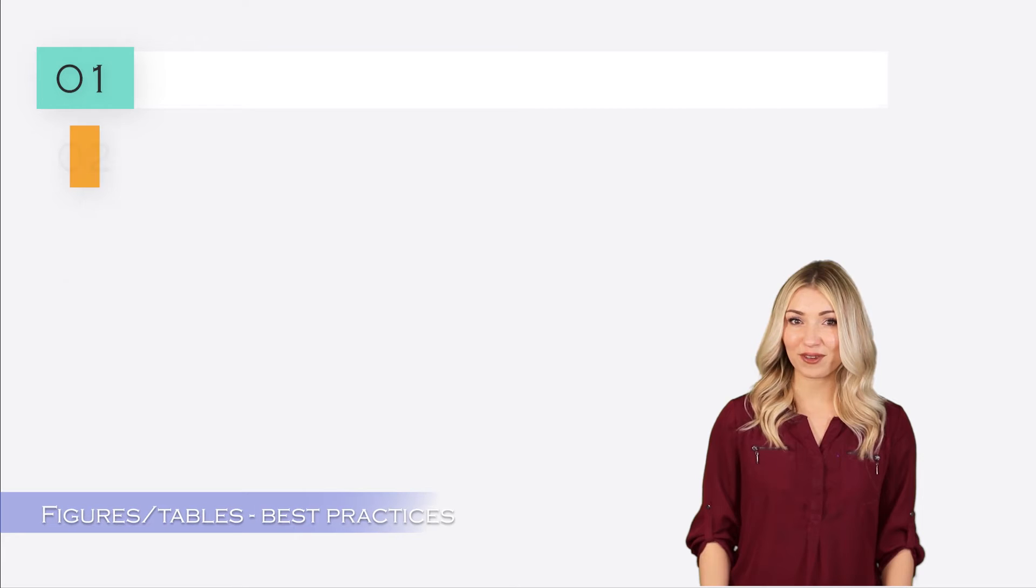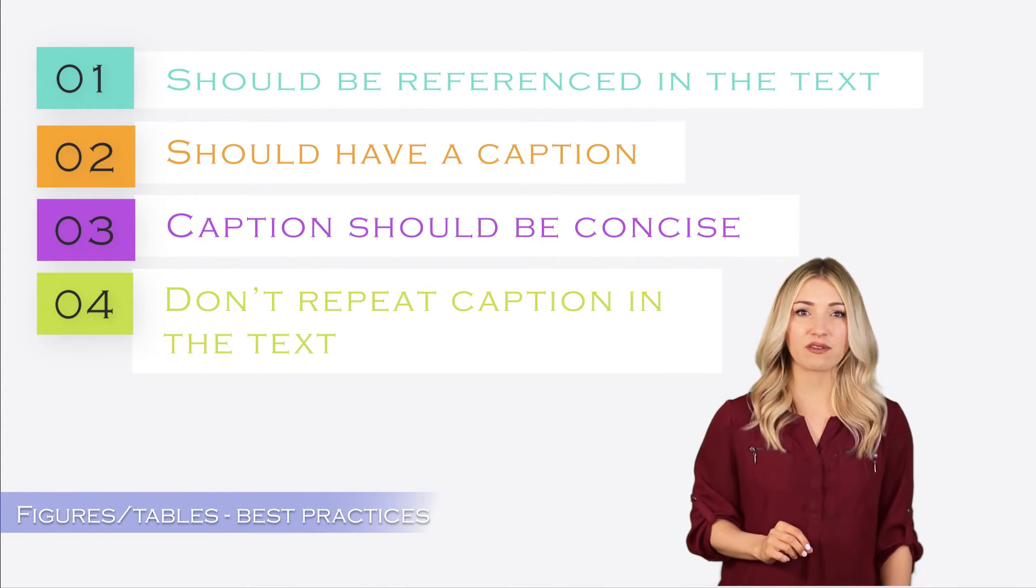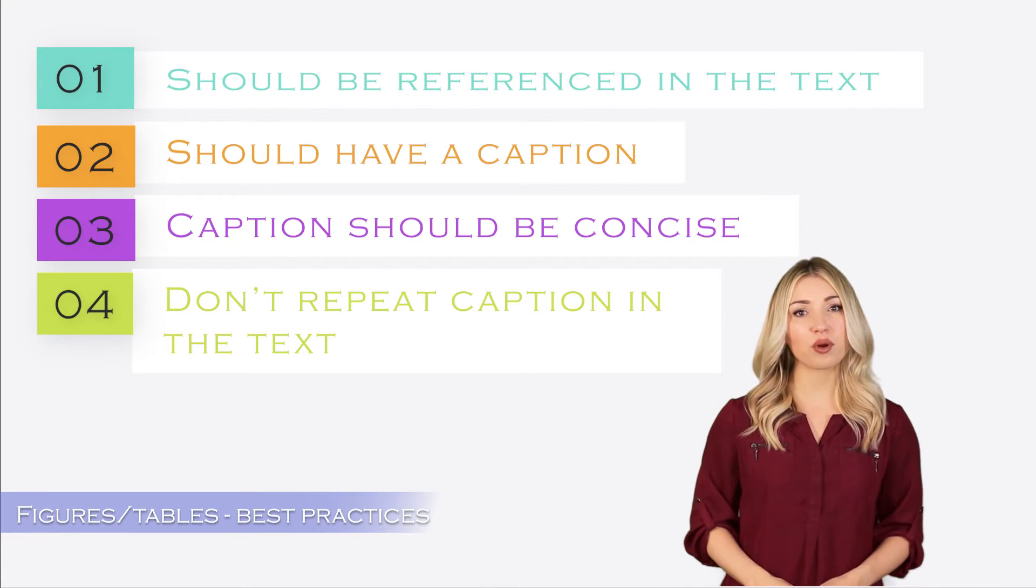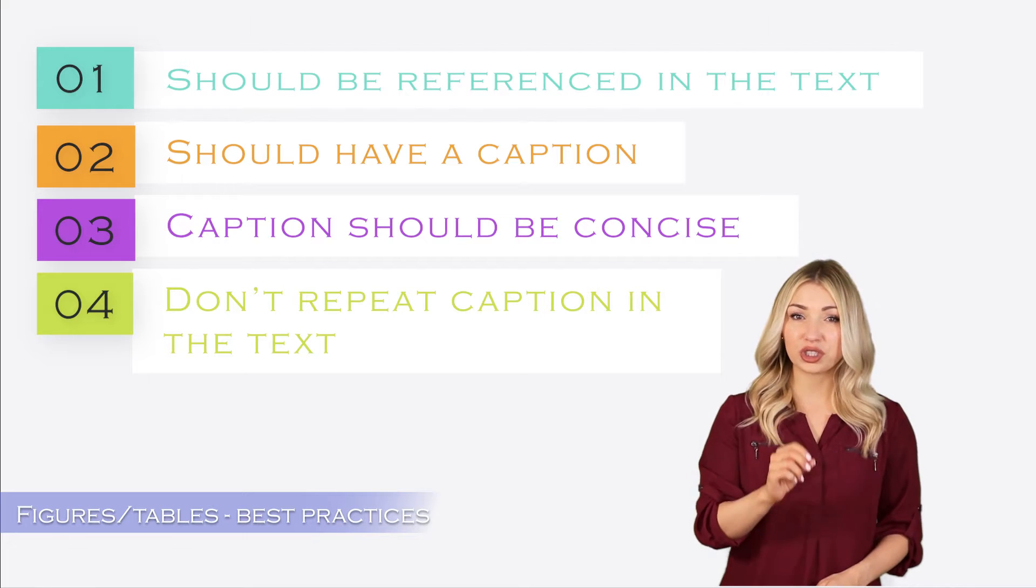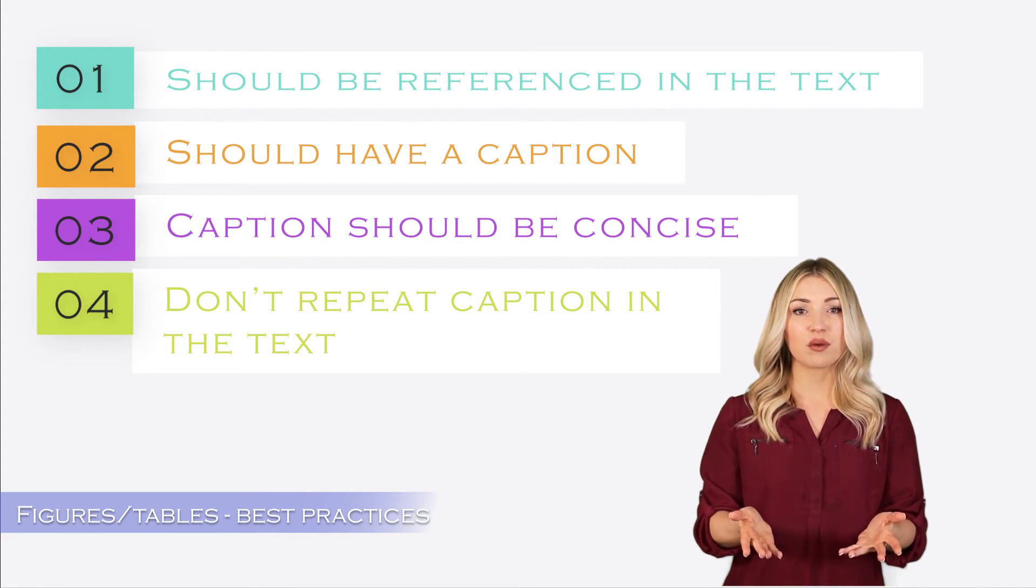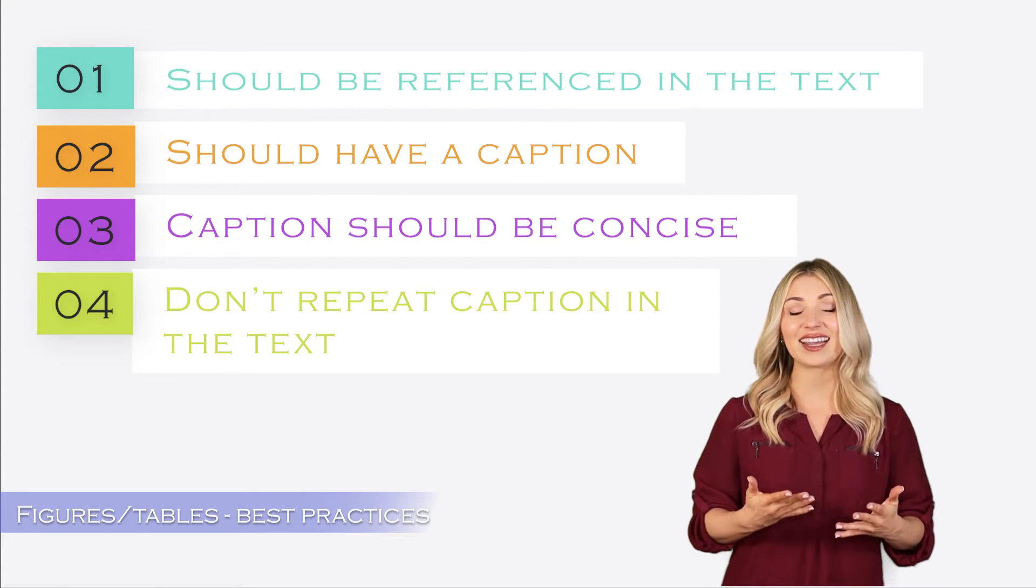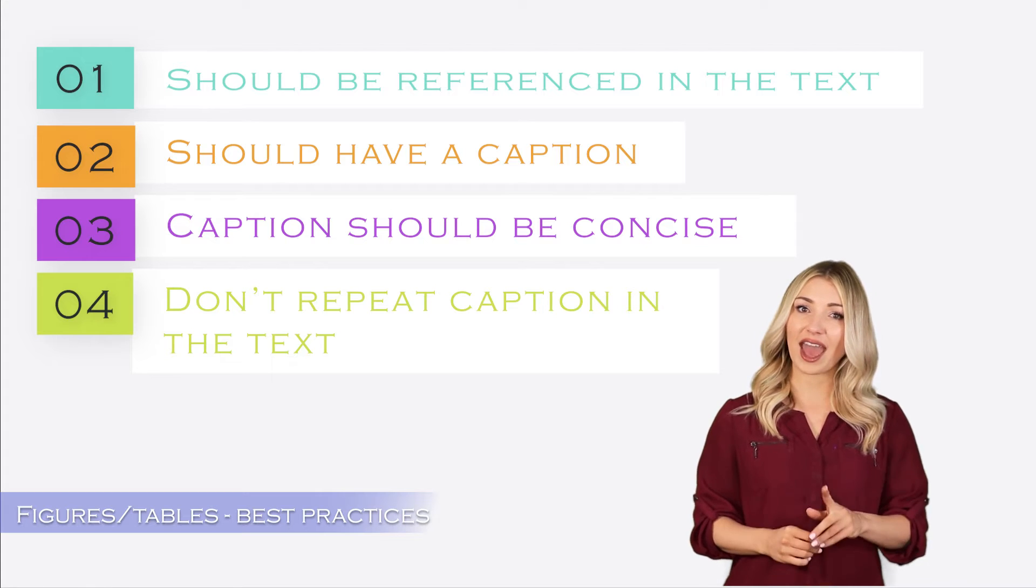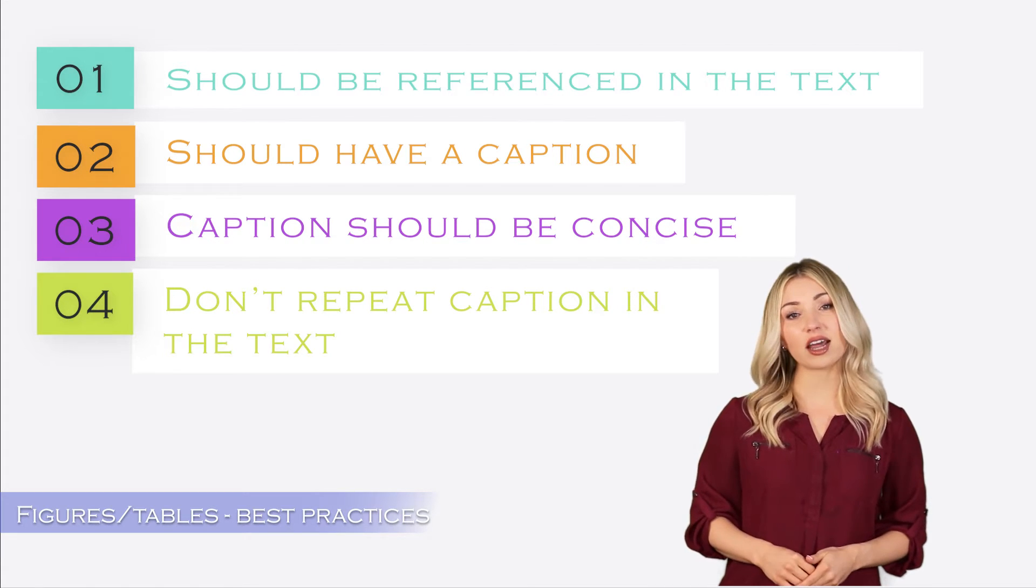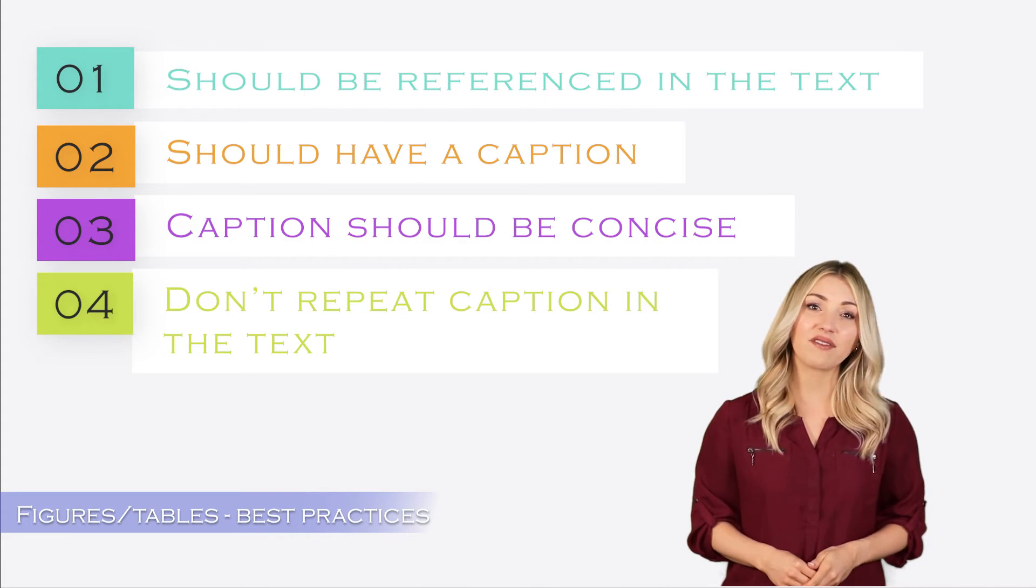When you are using figures and tables in your paper, you must reference them in your text. You cannot have a figure in your paper and not talk about it in your text. Another important thing is that your figure should have a caption that clearly explains what it is about. Most people skim through the paper just going through figures and tables without reading any text in the paper. So captions should be as short as possible, but detailed enough for the readers to understand the figure or table without having to read the text.